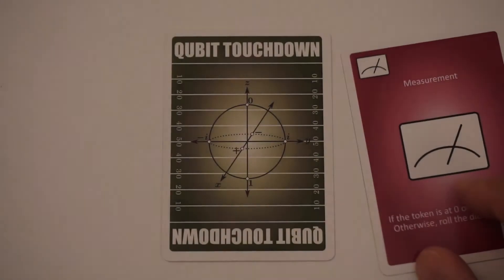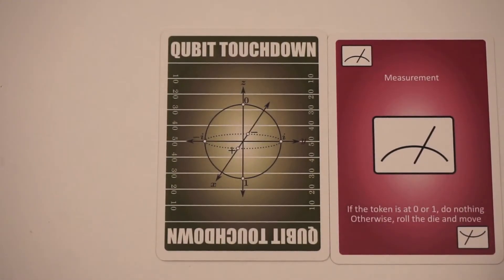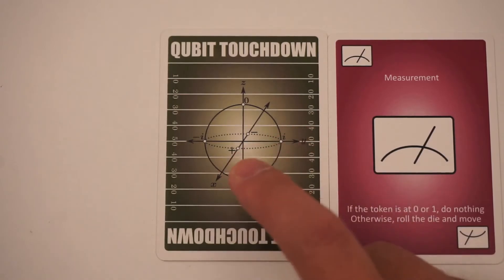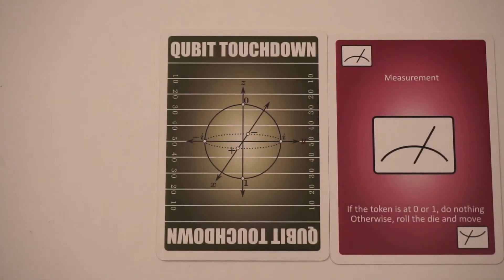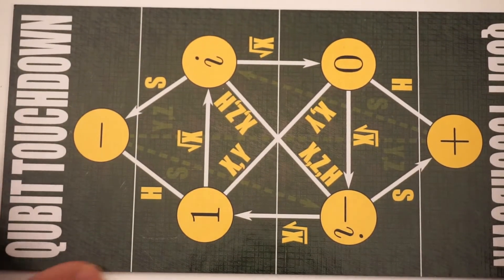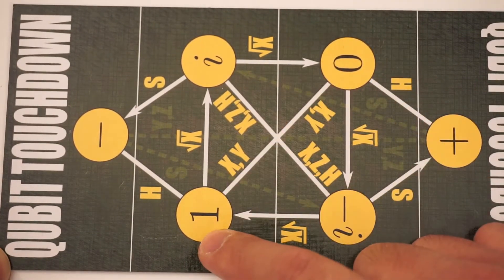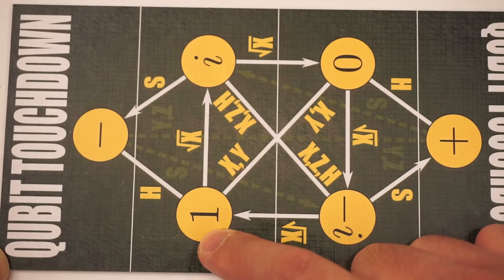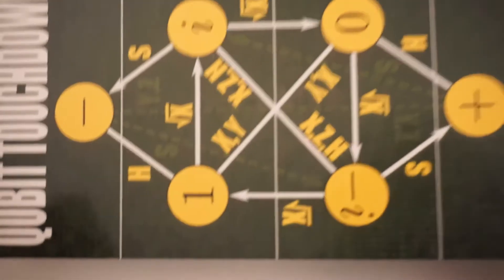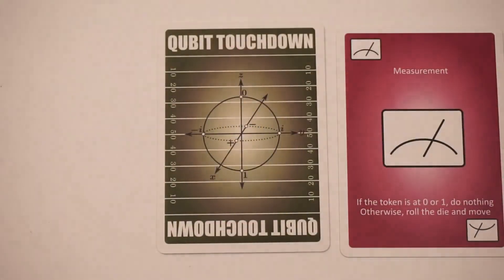And this measurement card corresponds to a quantum measurement in the z-axis. So if the qubit is already at zero or one, it does nothing. And if the qubit is anywhere else, then when you measure it, you get a 50-50 chance of getting zero or one.